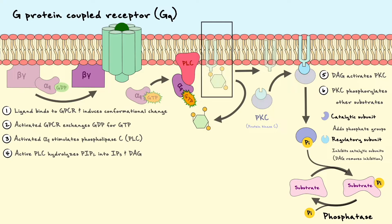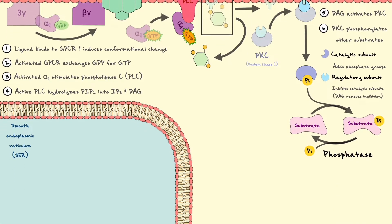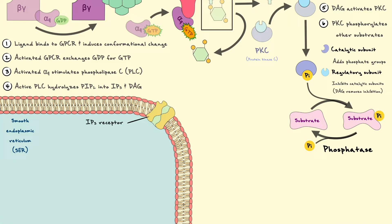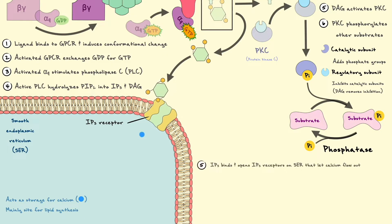The other product made from PIP2 is IP3. In comparison to DAG, IP3 is diffusible in the cytosol. One of its important downstream functions is acting as a ligand for IP3 receptors located on the membrane of the smooth endoplasmic reticulum. The smooth ER is a storage site for calcium, and upon opening, IP3 receptors let calcium flow out into the cytosol.